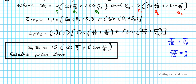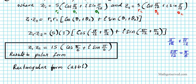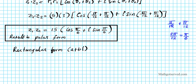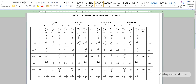Now we're also asked to find the result in rectangular form, which is also known as the a plus bi form. So let's look at our table of common trig angles. Pi over 6 — that's 30 degrees — is right here. So it's a common angle, which means we can find the exact value.